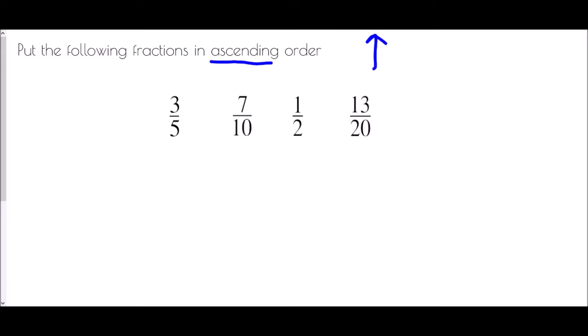So how are we going to find a common denominator between three-fifths, seven-tenths, one-half, and thirteen-twentieths? We're looking for a common multiple of 5, 10, 2, and 20. In this case we've been helped out because 20 is already there — 20 is a multiple of 5, 10, and 2 — so we can make all of our fractions have denominators of 20.